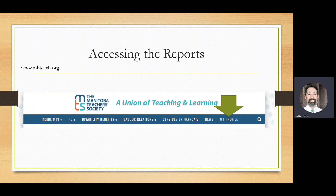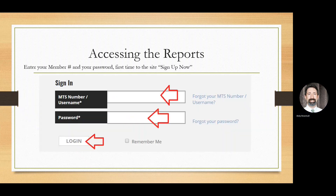To access the reports, the first thing you want to do is log into MyProfile. The MyProfile link is available on our homepage, www.mbteach.org. Once you click on that, you'll be able to log in using either your MTS number or username and a password. Note that there are options on the right-hand side in case you have forgotten your login name, your MTS number, or your password. These are automated processes for getting that information to your email.